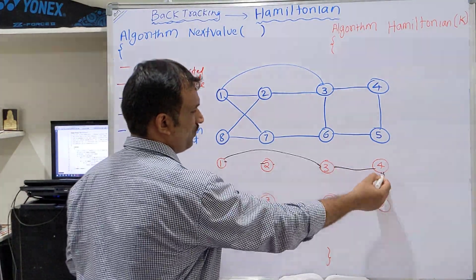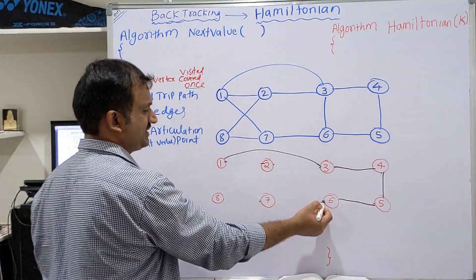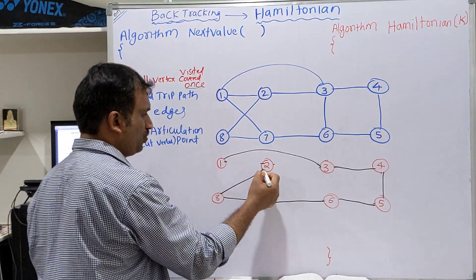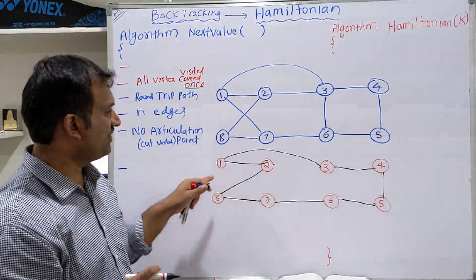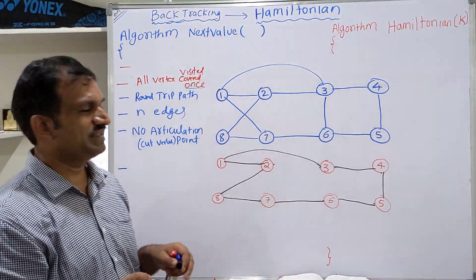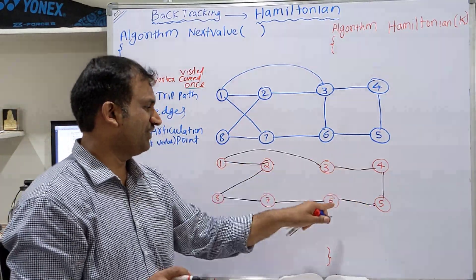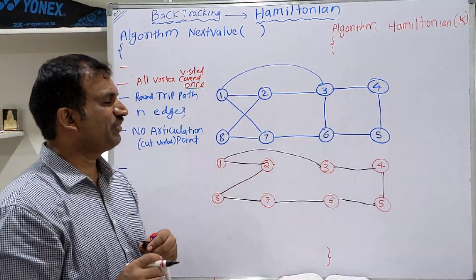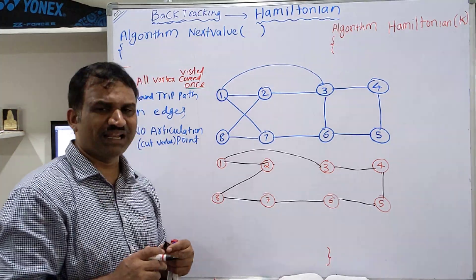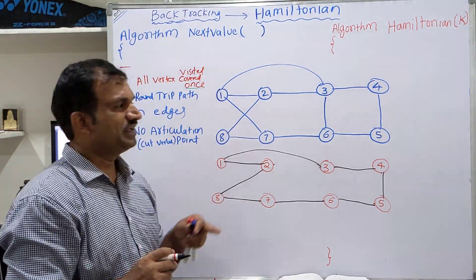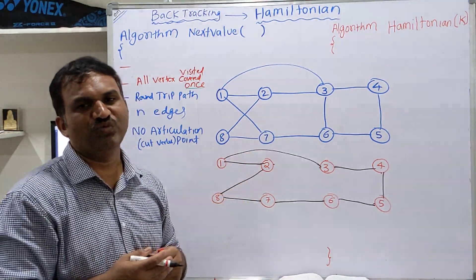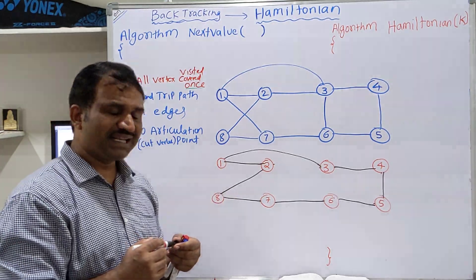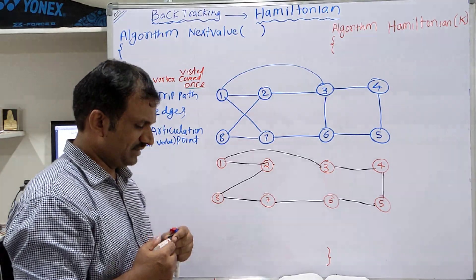From 1→3, then 3→4, 4→5, 5→6, 6→7, 7→8, 8→2, and 2→1. This is a complete Hamiltonian Cycle: 1-3-4-5-6-7-8-2-1. This is a simple example. For a given graph there may be more than one Hamiltonian Cycle.